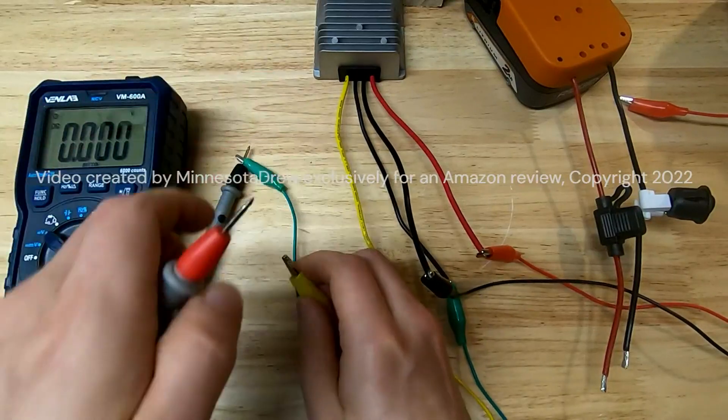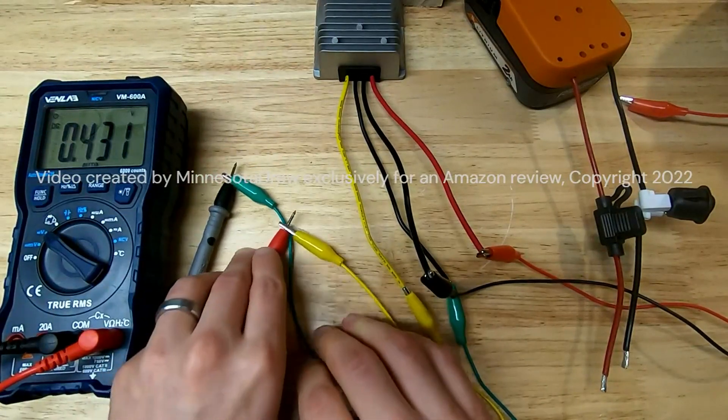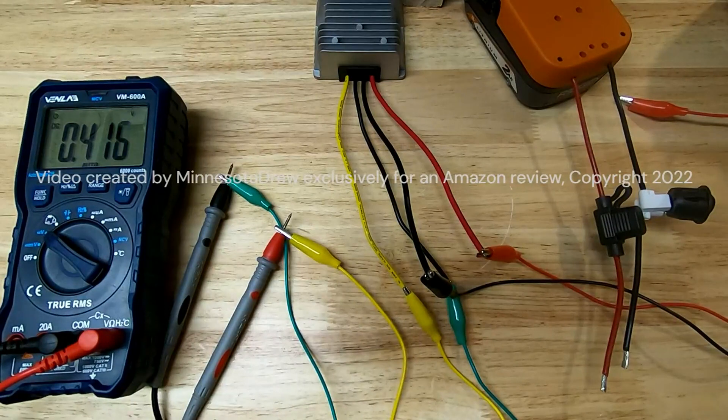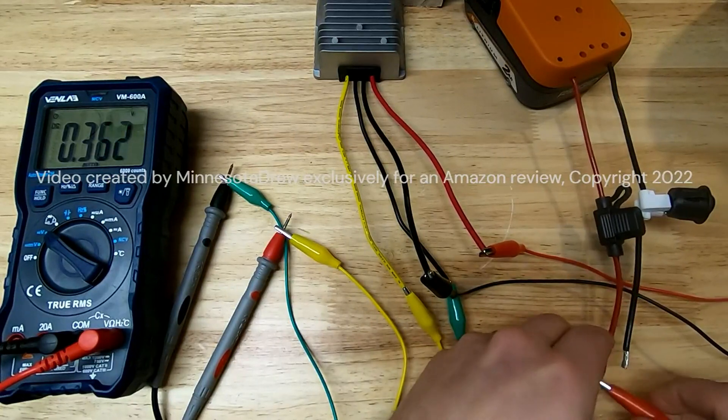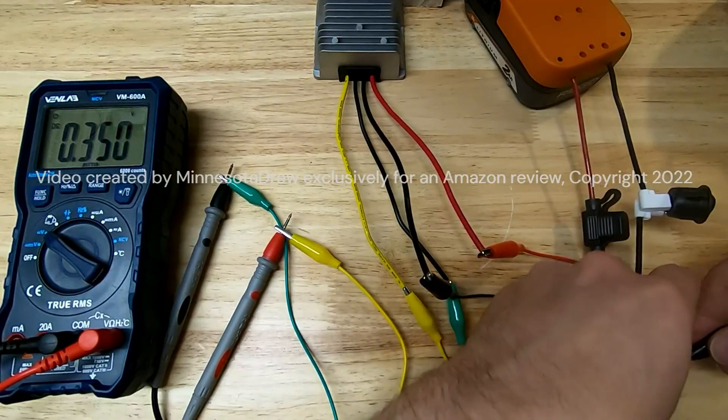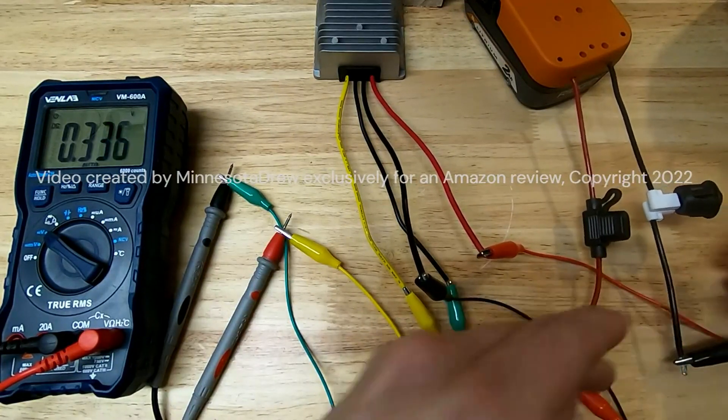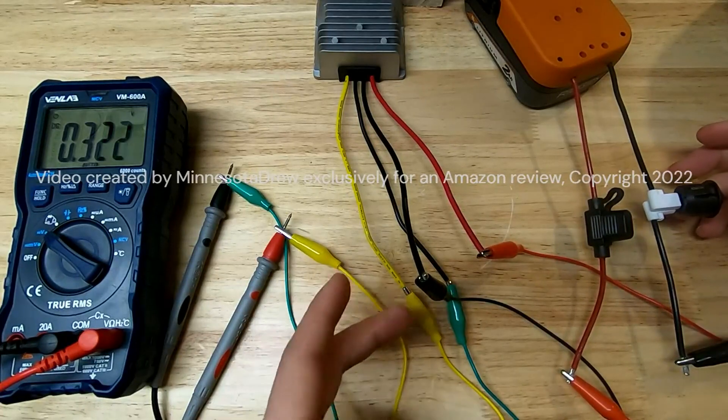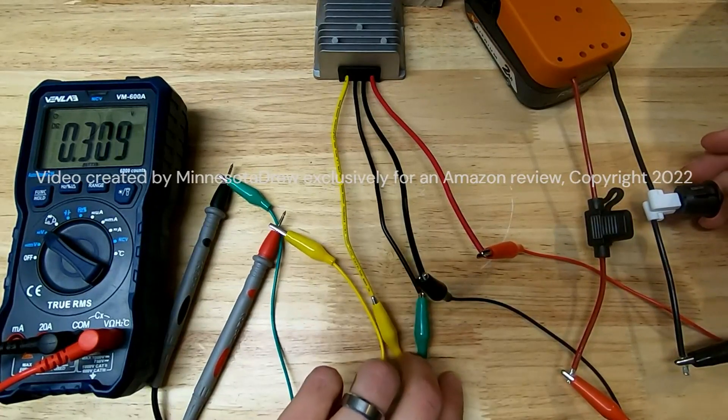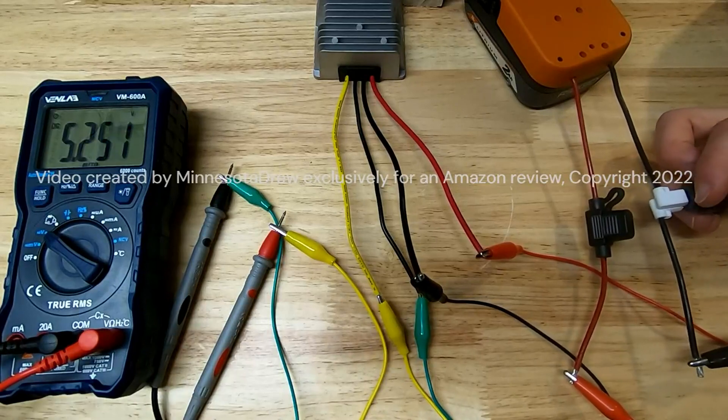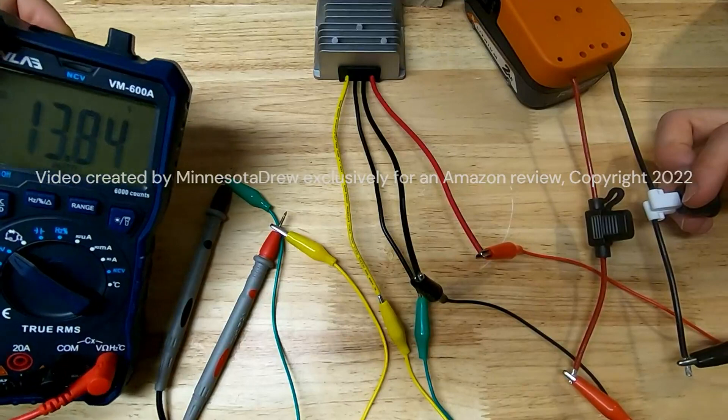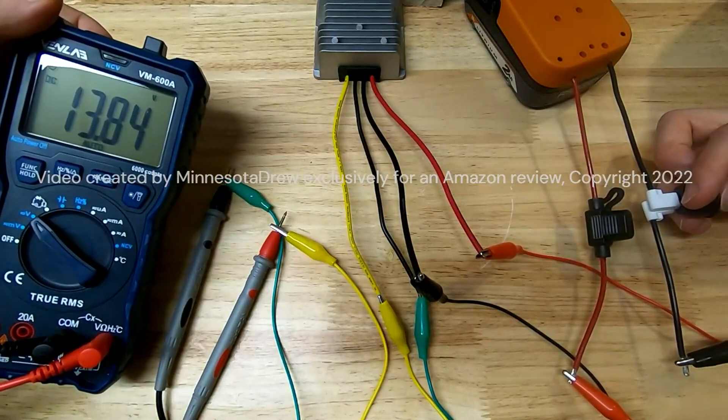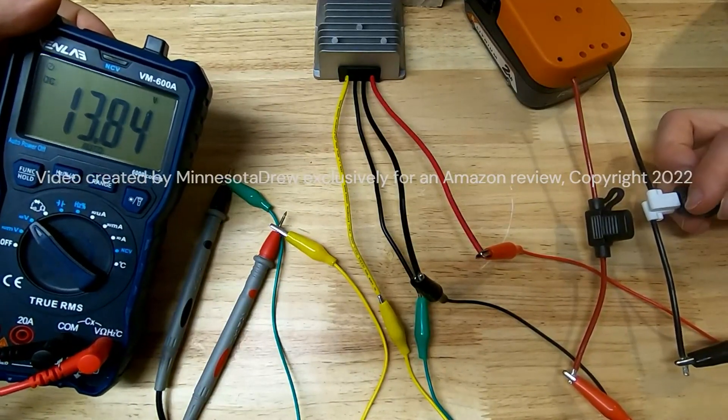So we will put red right there, black right there. Make sure no wires are touching each other and we'll flip the switch.